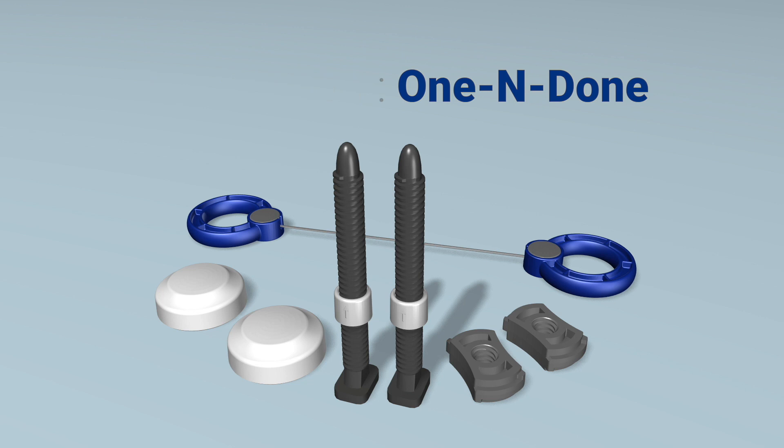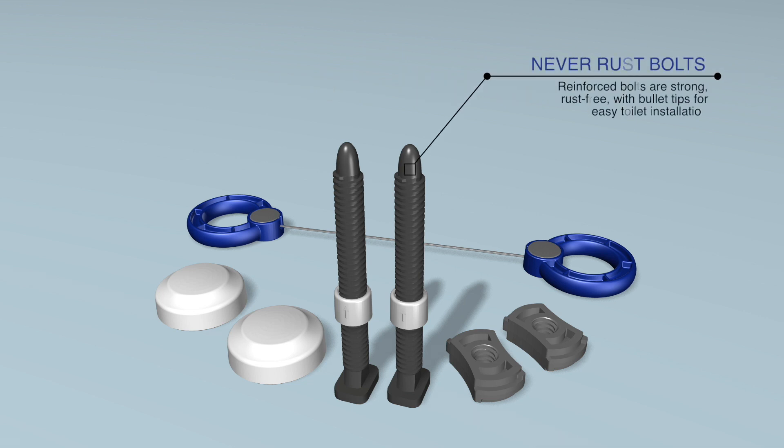The solution? 1N Dunn. Reinforced bolts are strong and rust-free, with bullet tips for easy toilet installation.